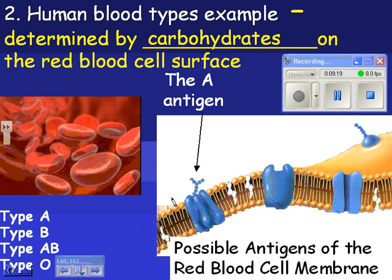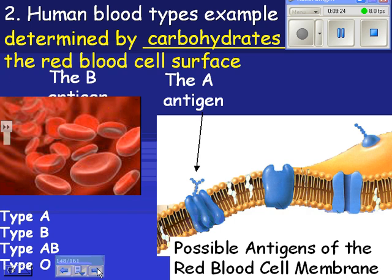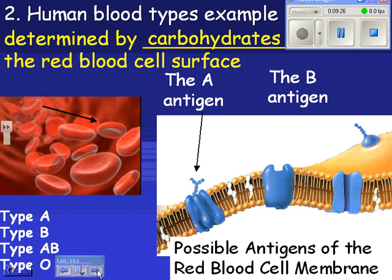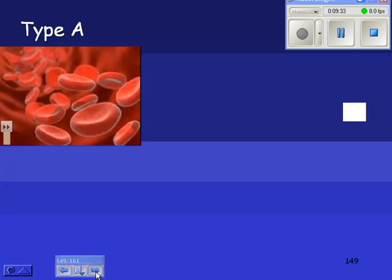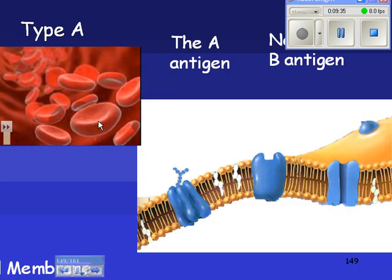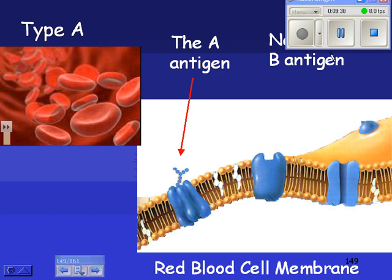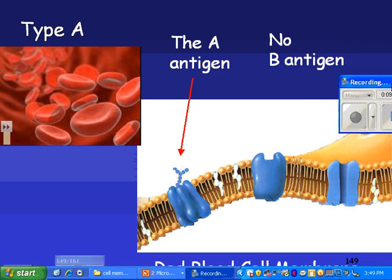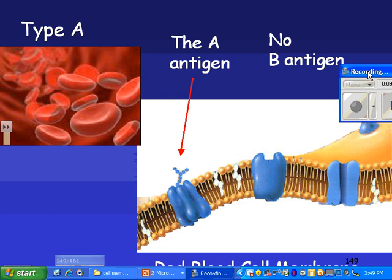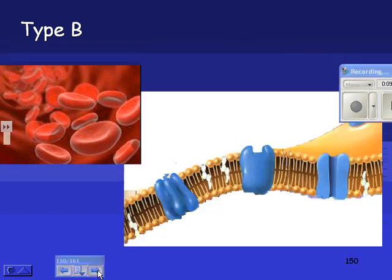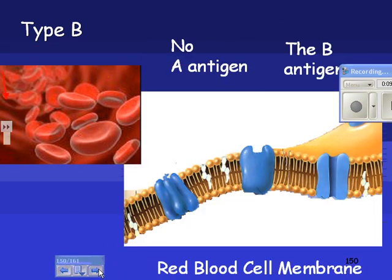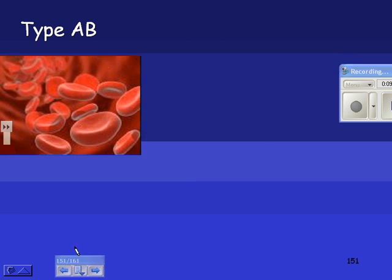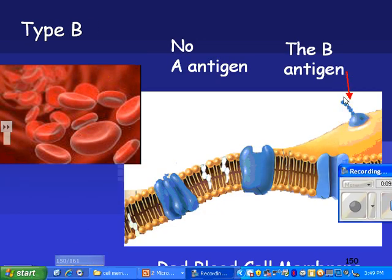This is antigen A, and this one is antigen B — you can see antigen B looks a little different from antigen A. If you have type A blood, your red blood cells have the A antigen but no B antigen. If you're type B, you have no A antigen but you do have the B antigen.